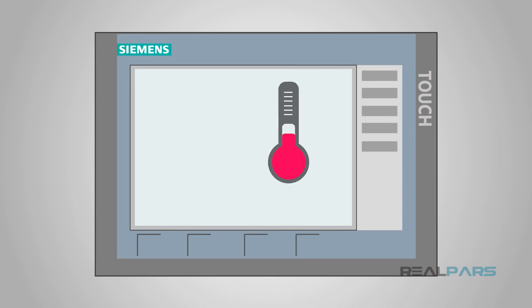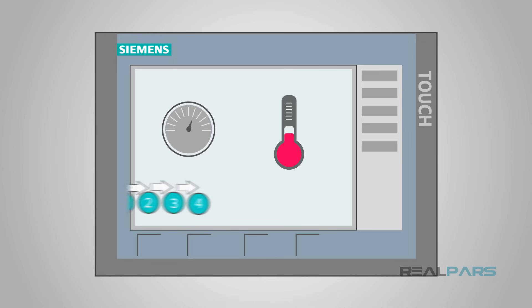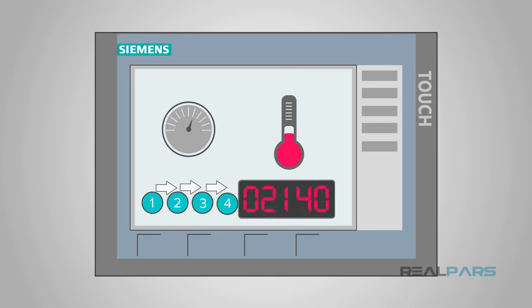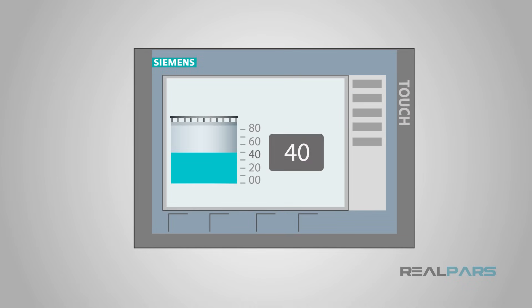They may include information like temperature, pressure, process steps, and material counts. They can also show very precise levels in tanks and exact positioning of machines.